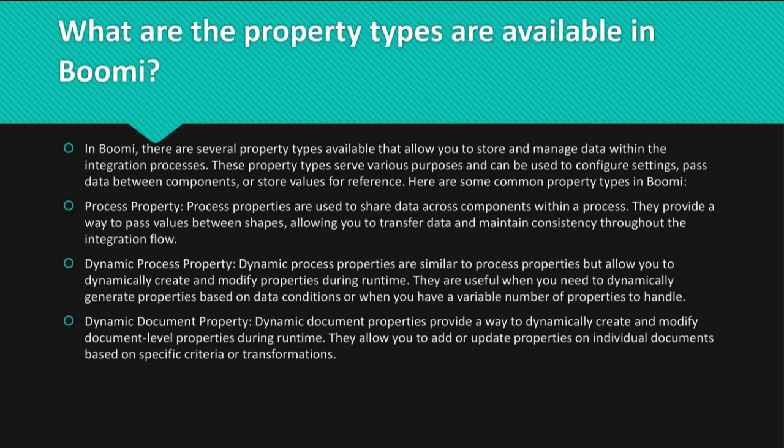Process property: Process properties are used to share data across components within a process. They provide a way to pass values between shapes, allowing you to transfer data and maintain consistency throughout the integration flow.